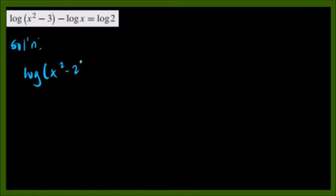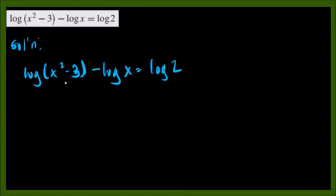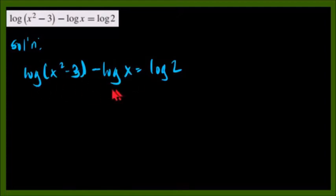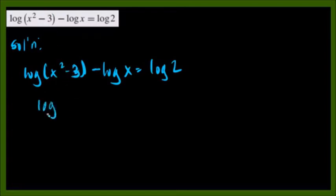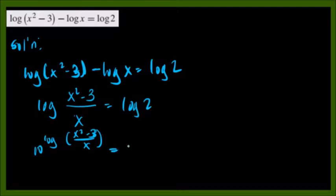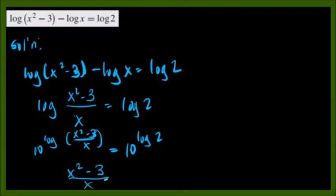Using the second property — the quotient property of logarithm — we transform the left side into a fraction. The expression inside the logarithm (the abscissa) becomes a fraction. So we have: log[(x squared minus 3) over x] equals log 2. Then we raise everything to base 10, and we end up with: (x squared minus 3) over x equals 2.